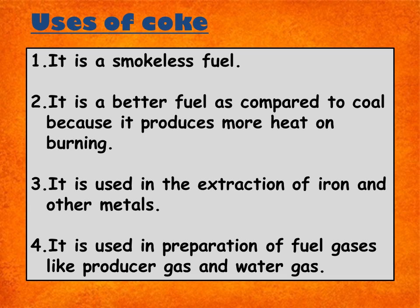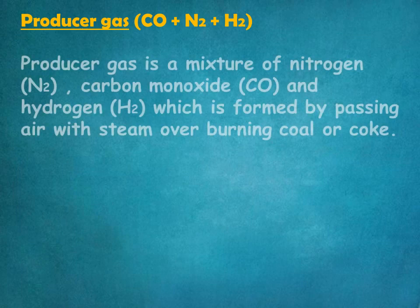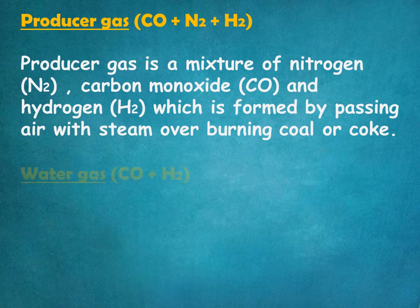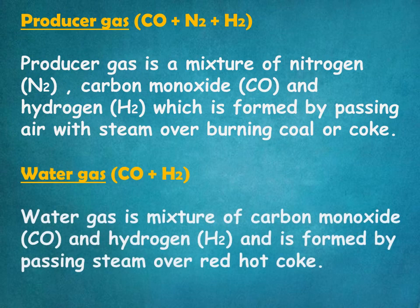Coke is a smokeless fuel and a better fuel compared to coal because it produces more heat on burning. It is used in the extraction of iron and other metals. It is also used in the preparation of fuel gases like producer gas and water gas. Producer gas is a mixture of nitrogen, carbon monoxide, and hydrogen, formed by passing air with steam over burning coal or coke. Water gas is a mixture of carbon monoxide and hydrogen, formed by passing steam over red hot coke.